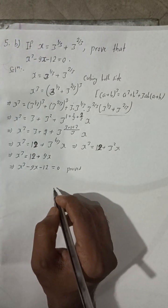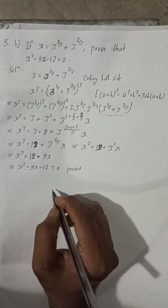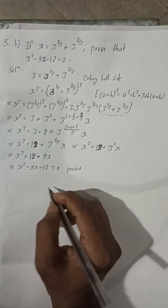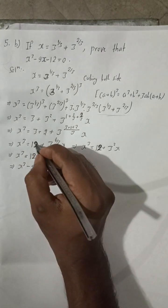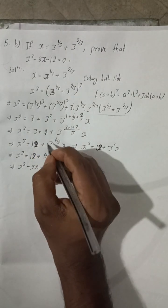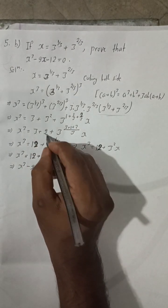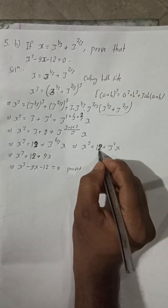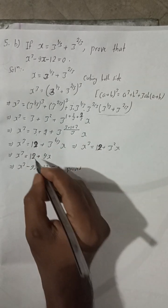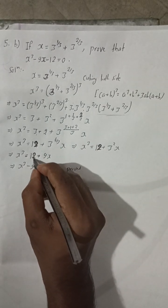This is our complete solution. Sorry for the earlier mistake — 9 plus 3 is equal to 12, so this is 12. Hence x cubed minus 9x minus 12 equals 0 is proved.